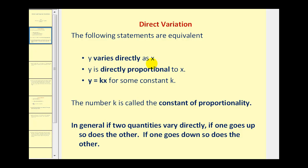So if we see any of these key words or this key equation, we know we're dealing with direct variation. The number k is called the constant of proportionality. If we have the equation y equals kx, this would be a line passing through the origin, or have a y-intercept of zero, and the slope of that line would be k, the constant of proportionality.